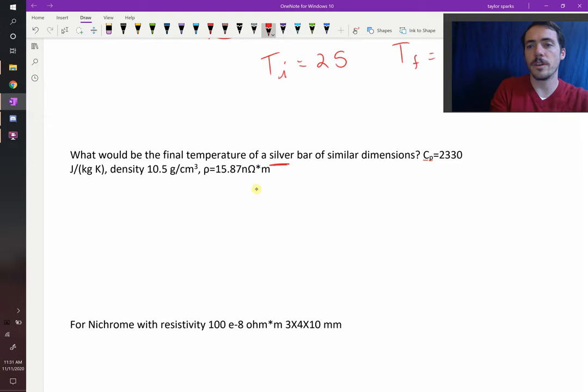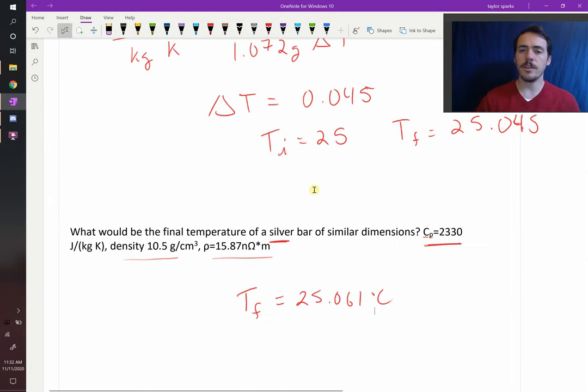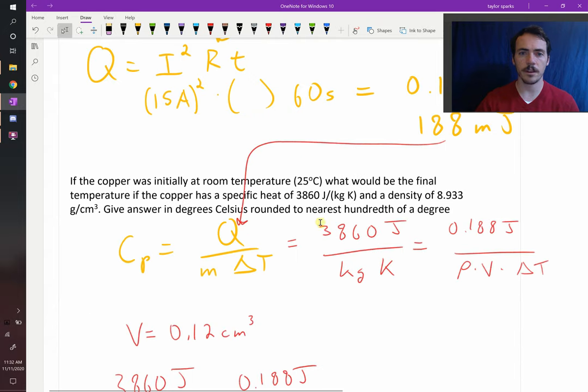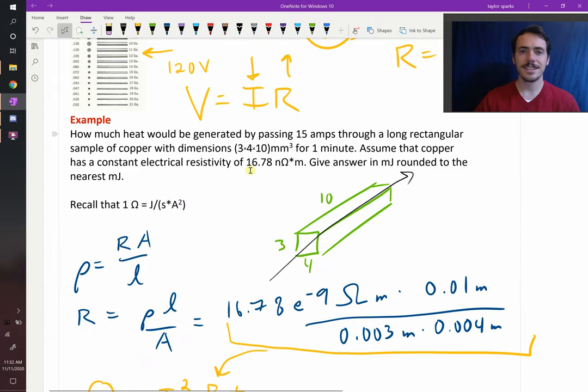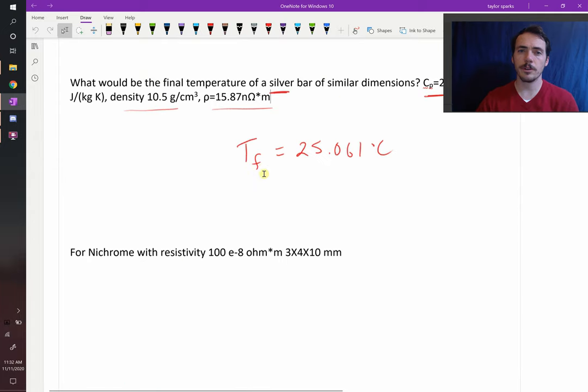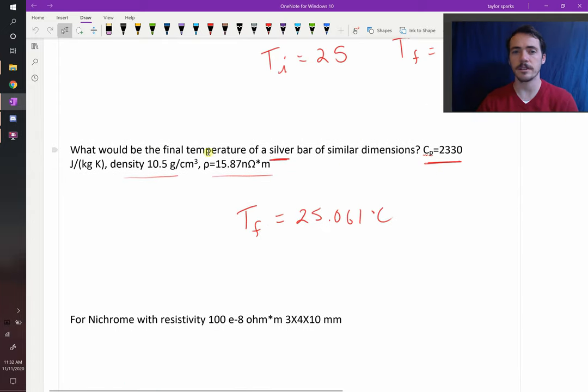If it's silver, what do we need to take into account? For one thing, the specific heat will be different, the density will be different, and the resistivity will be different. When you plug all those things in, I get basically the same final answer: our temperature final is 25.061 degrees Celsius. So silver would also work, it's just far more expensive. Interestingly, even though silver is a little bit more conductive (its resistivity is 15.87 compared to copper at 16.78), you don't see any real improvement because you also have to take into account its heat capacity and density. Basically you get the same change in heat.